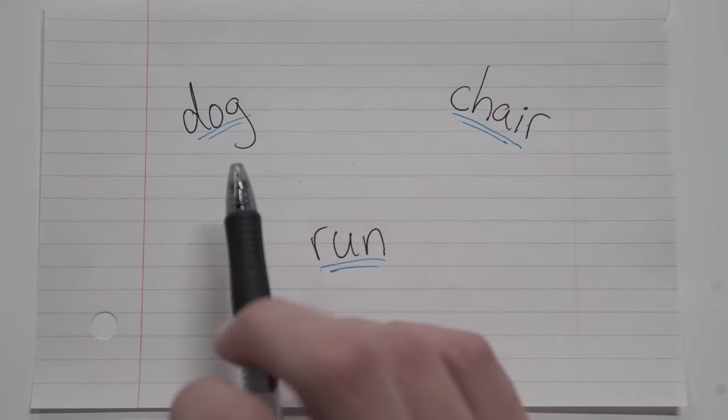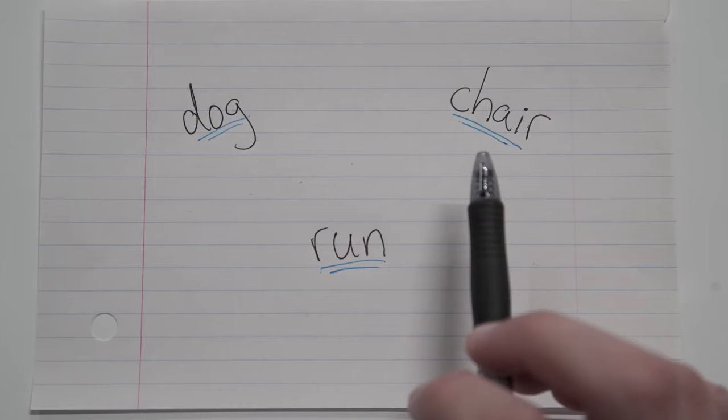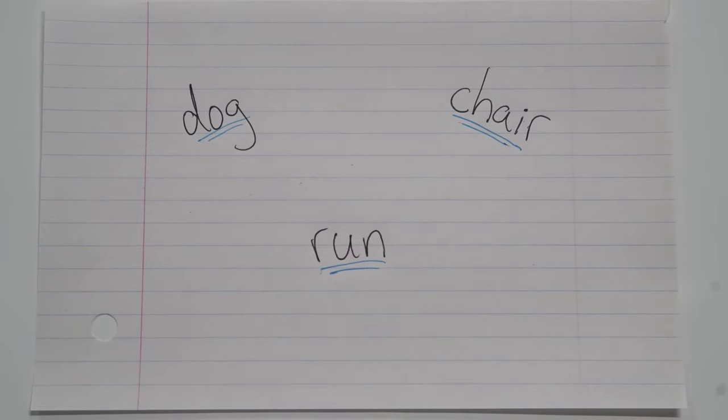The word dog, for example, has no prefix or suffix. The word chair has none either, and neither does the word run. And these are all very common words. So it's important to remember that prefixes and suffixes are only used with certain words, not all words.